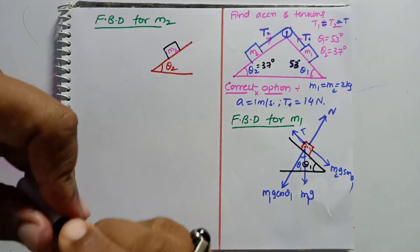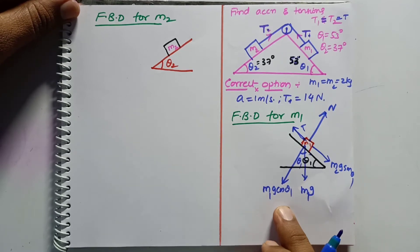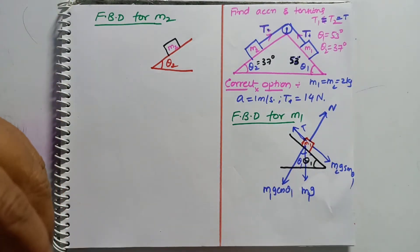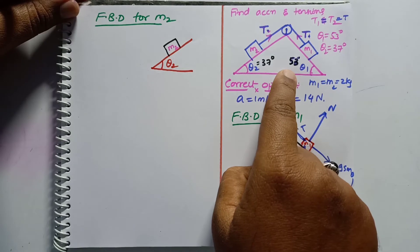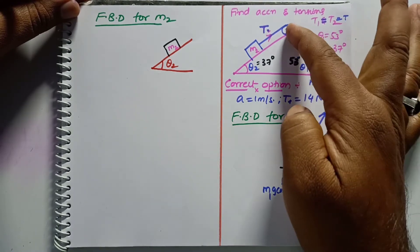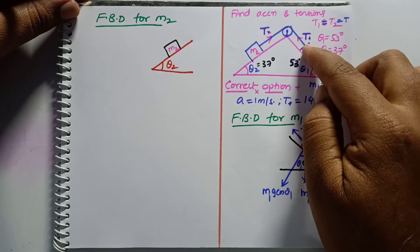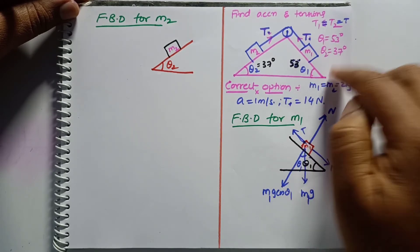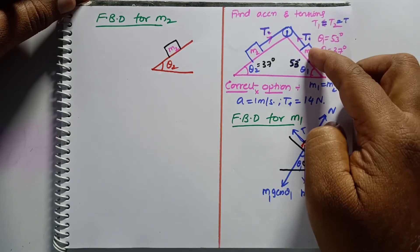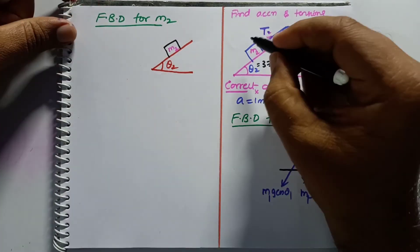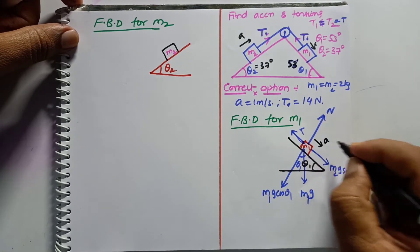θ1 is 53 degrees and θ2 is 37 degrees. By seeing the angles you can judge easily — the inclined plane with the larger angle means m1 will go down in that direction. Since θ1 is larger compared to θ2, m1 will move downward on its side. So acceleration direction is a in that direction.